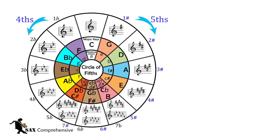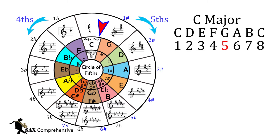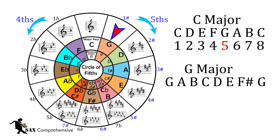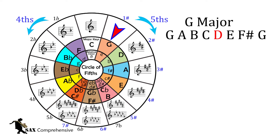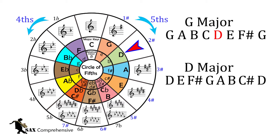Starting with C and moving clockwise, the key changes by a fifth. So if we take the scale of C and count five notes, that will take us to G, which is the next key. This key has one sharp: F sharp. From here we can continue going around the circle, starting now with the scale of G. If we count five notes, we will come to D, which is the next key. The key of D has two sharps, F sharp and C sharp, and has changed the key by another fifth.